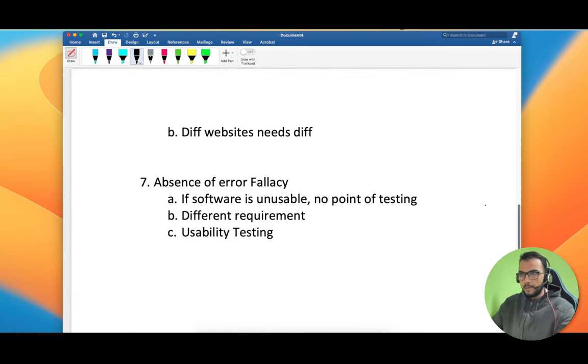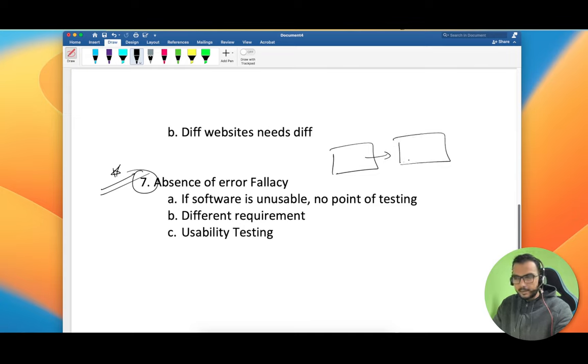Absence of error fallacy. This is one of the important principles. If your software is unusable even after testing, you have developed an app and possibly it is tested, everything is correct, but in the end you get to know that you have tested this application on different requirements. Then maybe the software is not usable to the end user. Then what's the point of development and every effort which we have put till here?